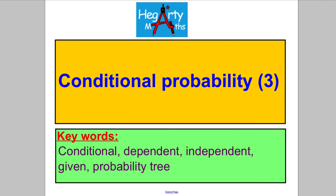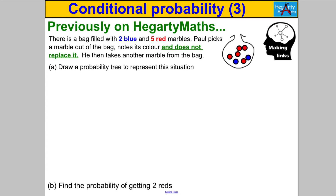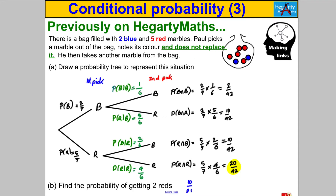Welcome to another video from Hegarty Maths. This is our third video on conditional probability. Starting with something we should already know — hopefully you got the following. This was a classic case of conditional probability where the probabilities of the color marbles you get on the second pick is influenced by what you got on the first pick, because you did not replace the marble in the bag.